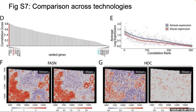Another comparison they did was measuring the same type of information but with different technologies — this whole figure compares Xenium and Visium. In panel D, they take each gene and compute the correlation between expression measured with Xenium versus Visium, ordered by rank of that correlation on the x-axis. As you would expect, there's a pretty good correlation with a lot of the genes — you would hope different technologies would generally be concordant in terms of expression.